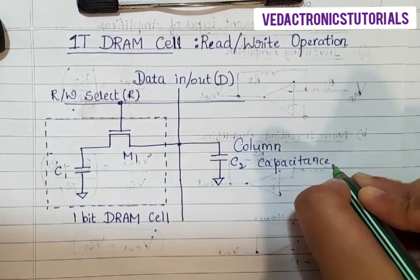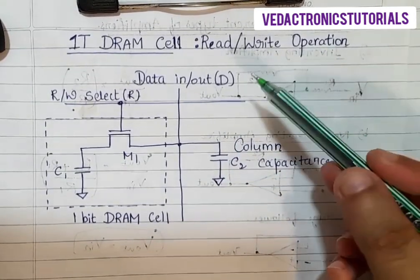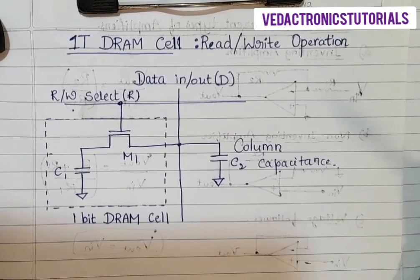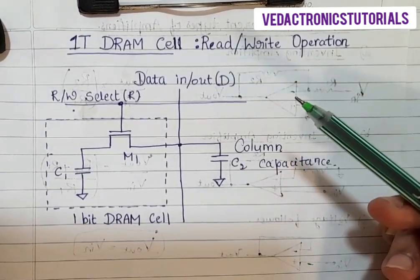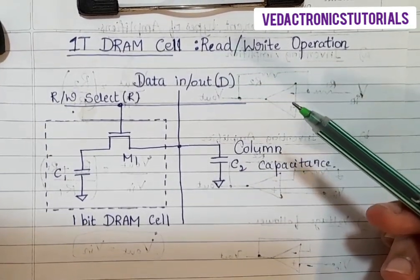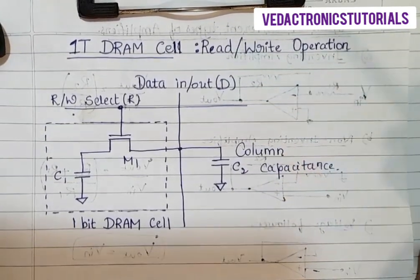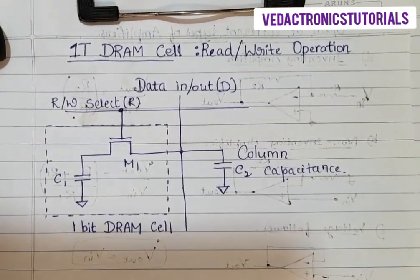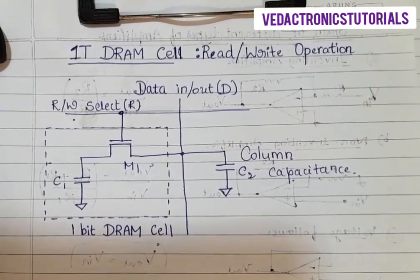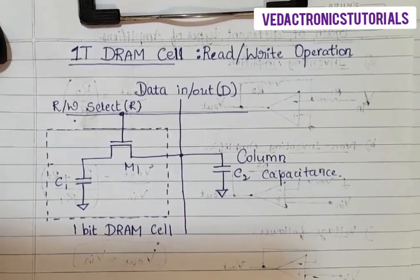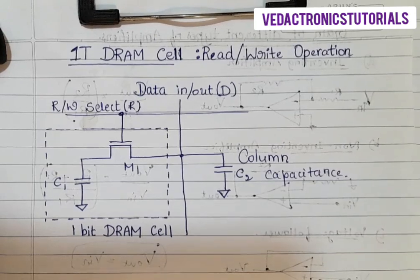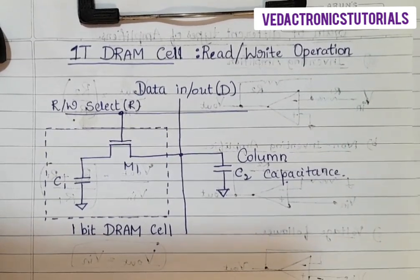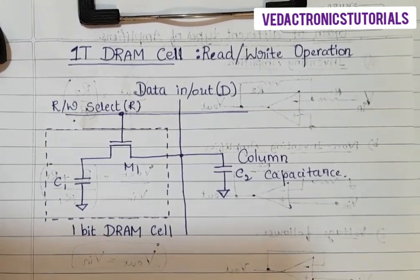First, let us see the write operation for logic 1 and 0. For the write 1 operation, the bit line D is raised to logic 1 by the write circuitry while the selected word line is pulled high by the row address decoder.